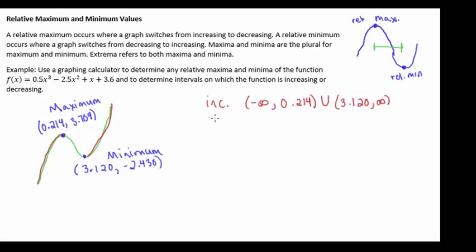We are decreasing in between our max and our min here, so we are decreasing from 0.214 until we get to 3.120.